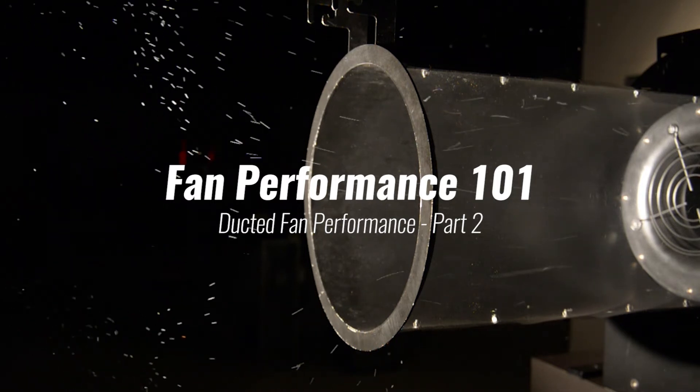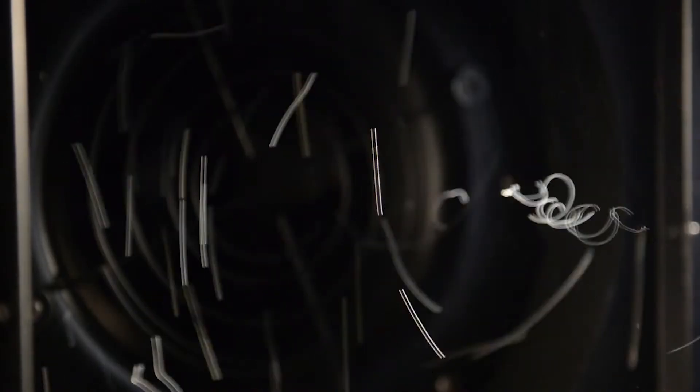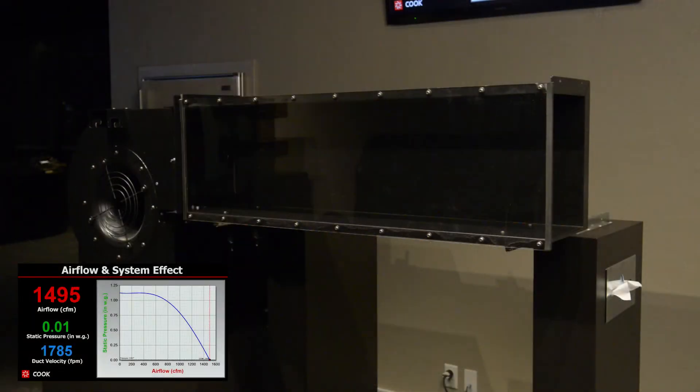Welcome back to part two of ducted fan performance. In this video we will explore the inlet side of the fan and how different duct configurations affect fan performance. We will also demonstrate system effect and its associated consequences. As a reminder, the base performance of the fan is 1500 CFM with no static pressure. Okay, let's begin.